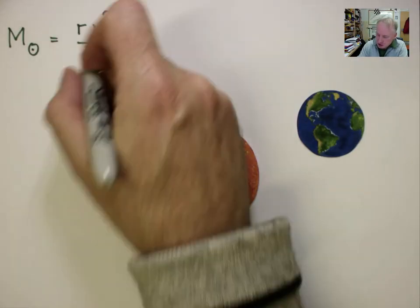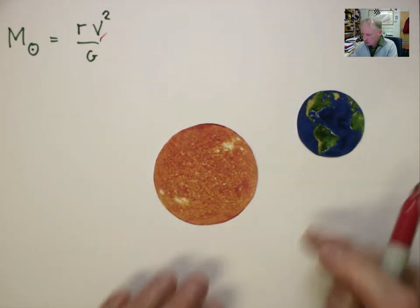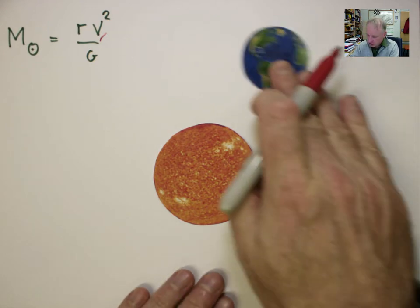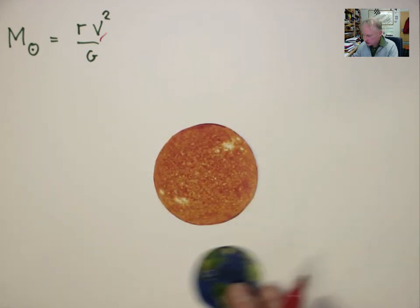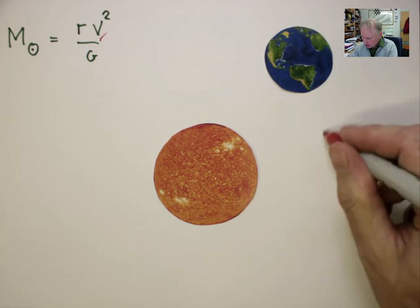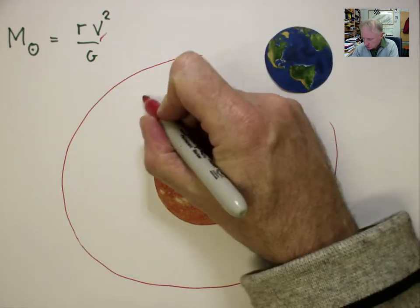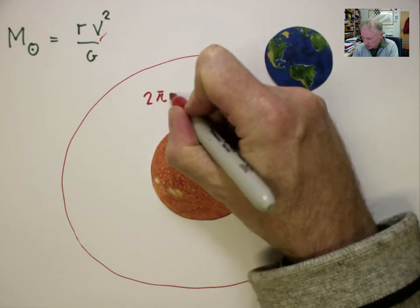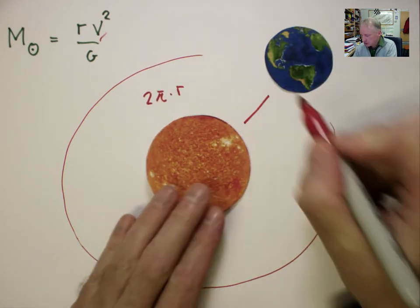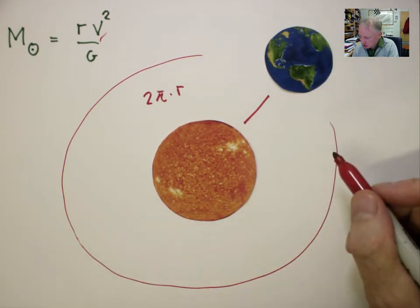How do we work out this linear speed V? Well, we know the Earth goes around the Sun over 365 days, and the circumference of this orbit is 2 pi r, whereby r is the distance between Sun and Earth.